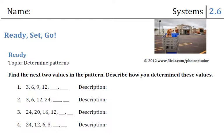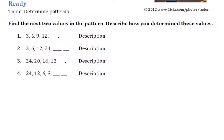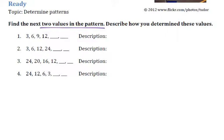Alright, let's take a look at this homework, Systems 2.6. We're going to start off with a little bit of review, finding the next two values in the pattern, and then describe how we determine these values. The way I look at it is I try to figure out if there's a pattern and what's the difference.